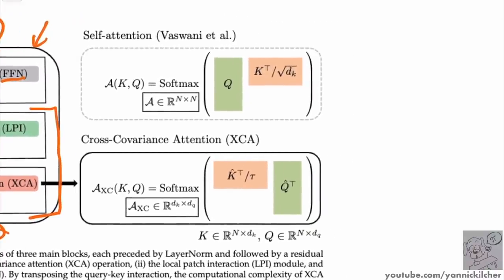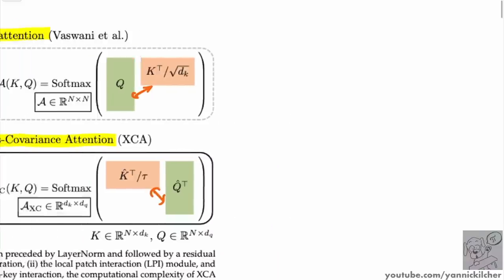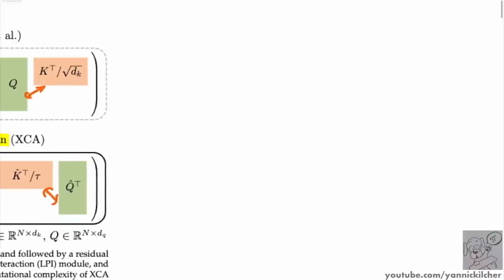There is a tiny difference in the math, but the idea is pretty simple — just a bit weird to think about. On the top you have classic self-attention used throughout current transformers, and on the bottom the new proposed cross-covariance attention. The main visual difference is that the green and orange matrices are swapped.